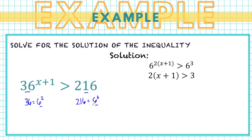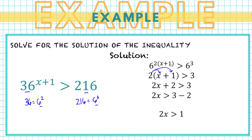Distributing 2 to the binomial gives 2x plus 2 greater than 3. Subtracting 2 from both sides gives 2x greater than 1. Dividing both sides by 2 gives the solution x greater than 1 half.